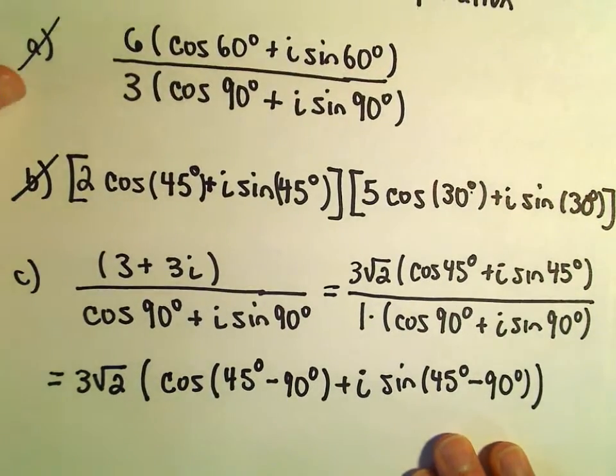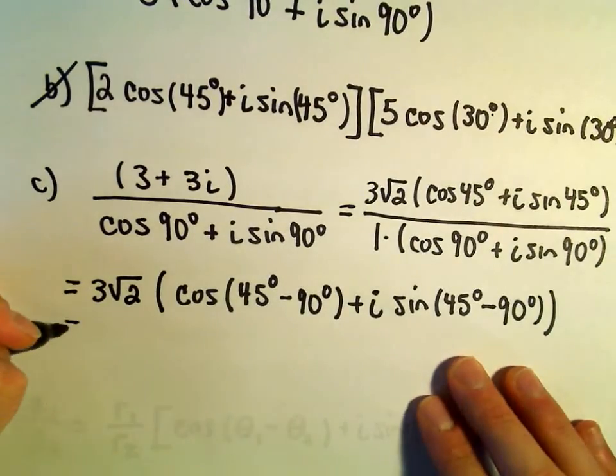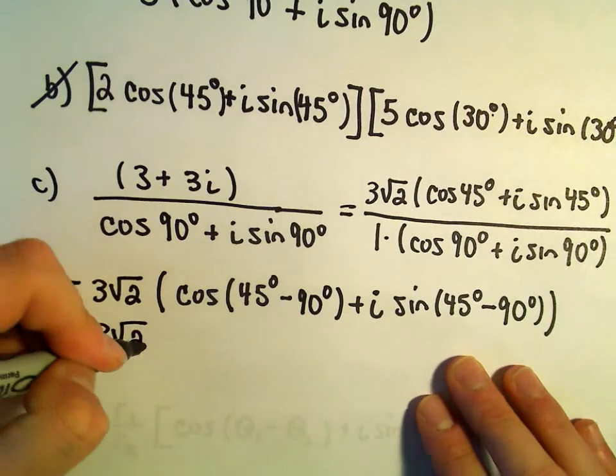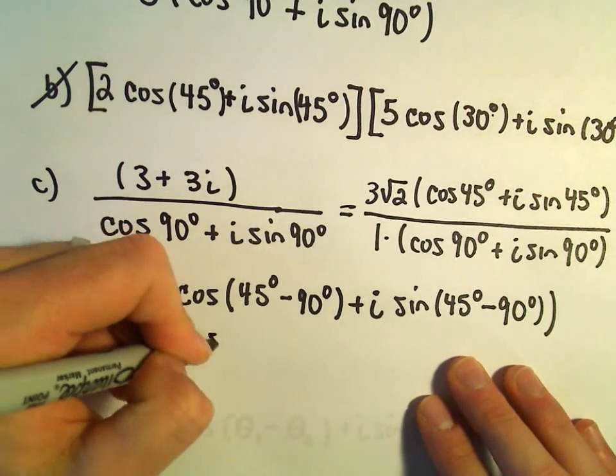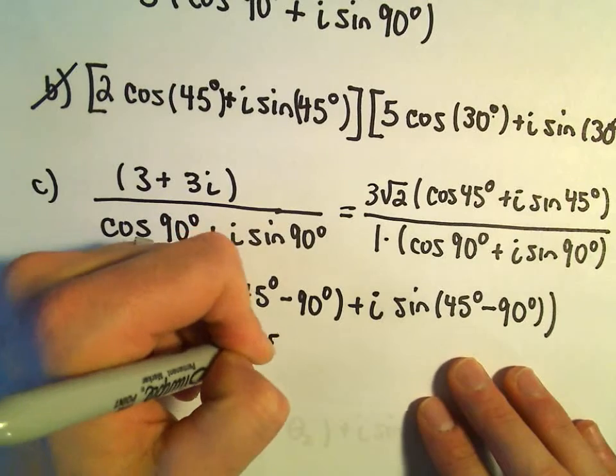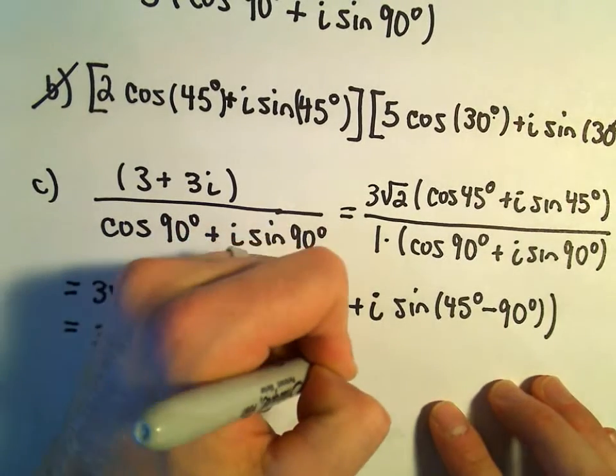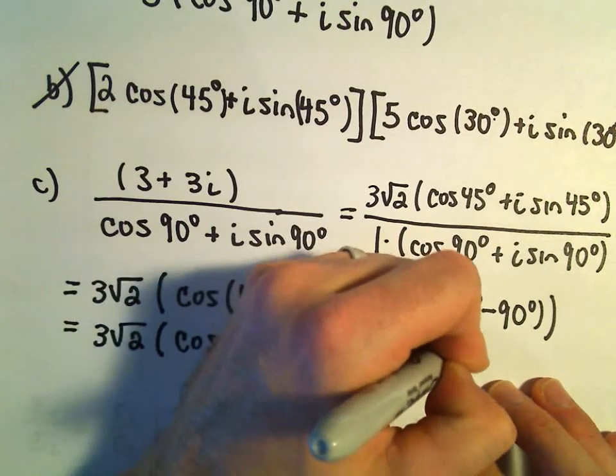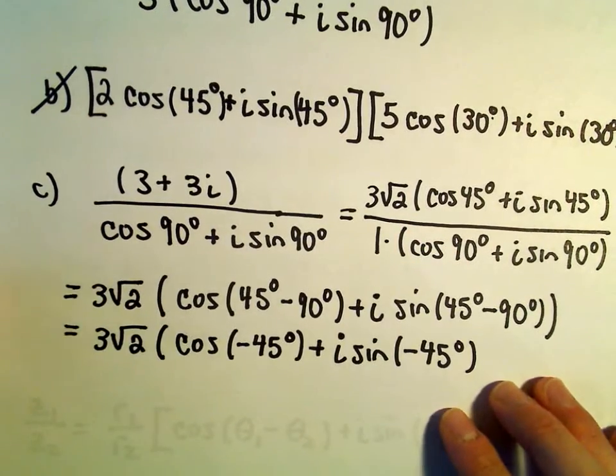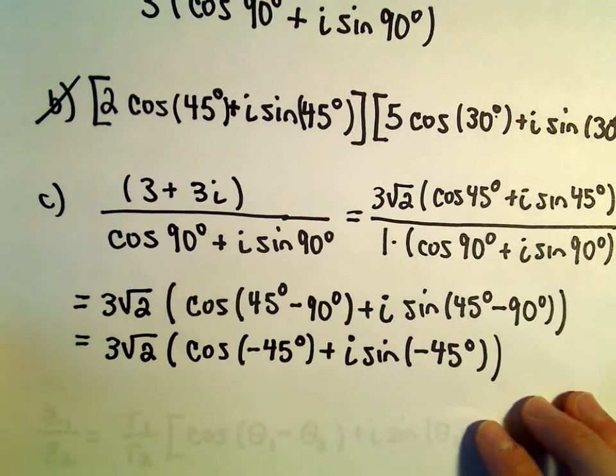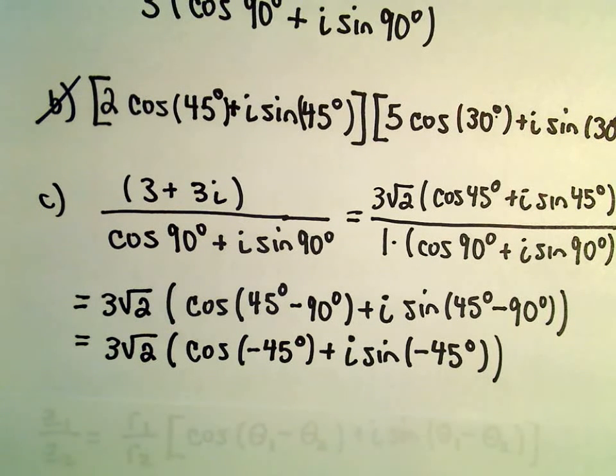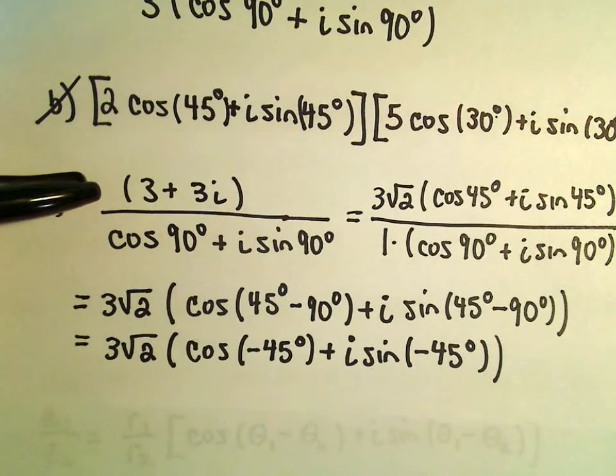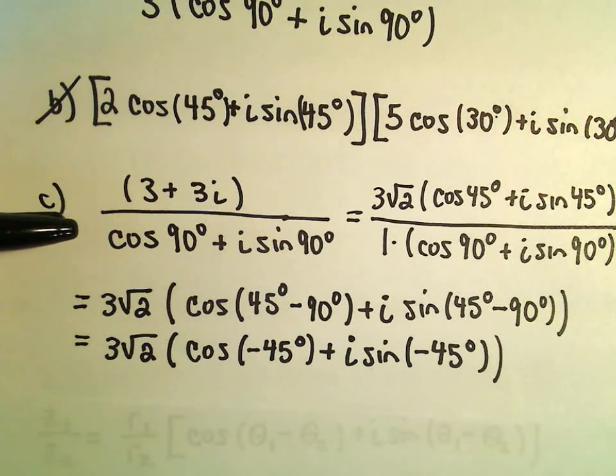And at that point, we've basically got our solution. We can always clean it up a little bit more: 3 root 2, this will be cosine of negative 45 degrees plus i sine of negative 45 degrees. And I think I would stop, leave it there. We need one more set of parentheses - now I'll leave it there. And now we've got the polar form for our new number after we perform the division.